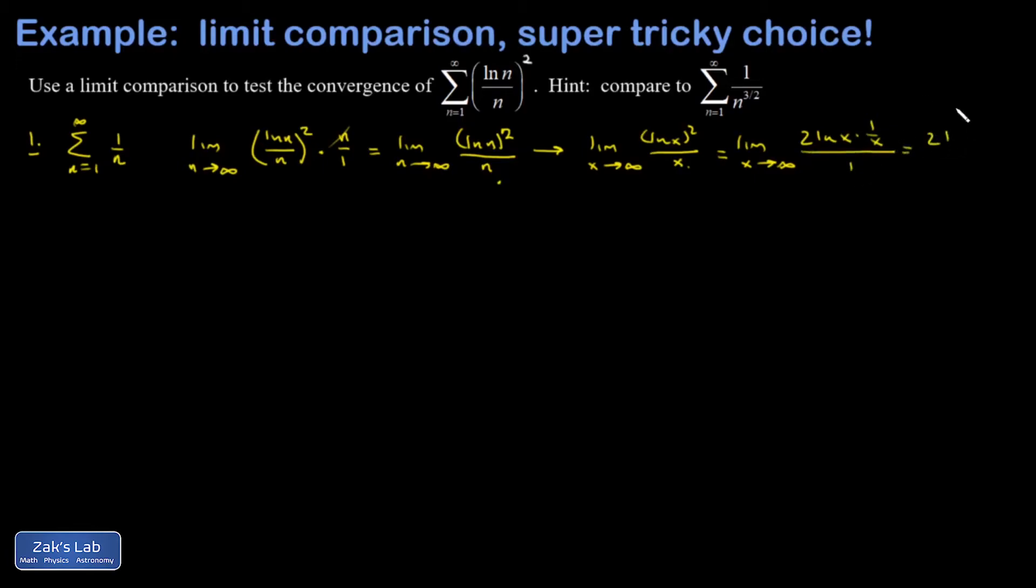And I'll rewrite this real quick as the limit as x goes to infinity, two natural log x over x. That's also an infinity over infinity indeterminate form.